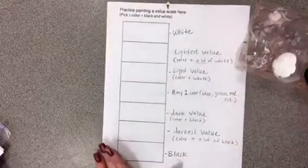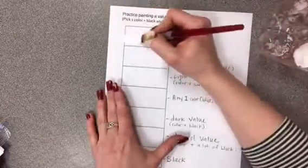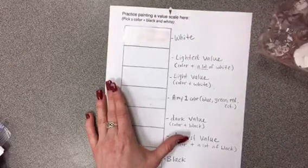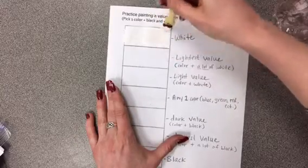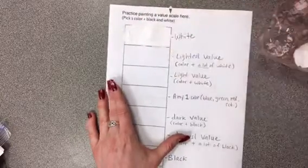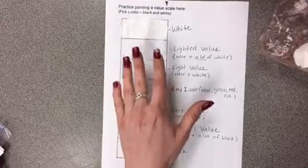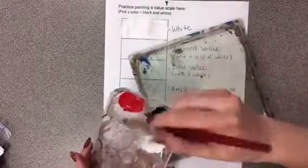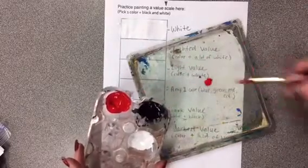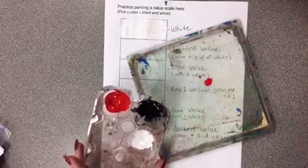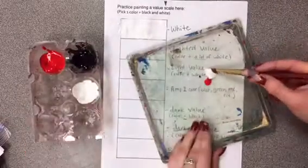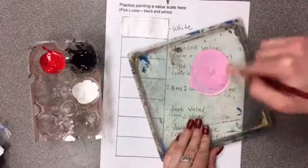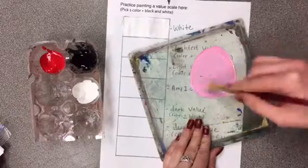I'm going to start with white — dip my paintbrush in white and paint this whole first box white. I know it seems silly to paint that box white when your paper's already white, but we want to practice painting light to dark. Next, I'm going to start with my lightest value, which means my color plus a lot of white. On my mixing plate, I'll take just a little bit of my color, wash my brush, then dip in a lot of white. Look how much more white I have than red — you want a lot of white. Mix it up until you get a pretty light value of red, kind of a pinkish shade.